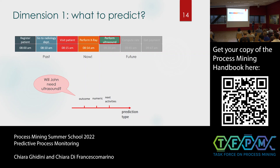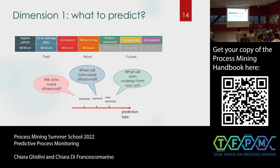We can also ask when John is going to have ultrasound — this is a numerical prediction, where the answer is a number, for instance 9:20. Or we can ask what John is going to do from now on — what is the sequence of activities he will perform in the future. This concludes the first dimension, and we will look in more detail at the different pipelines using all three dimensions.